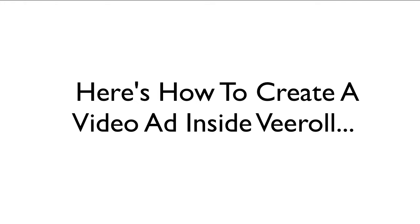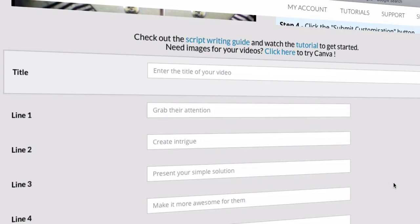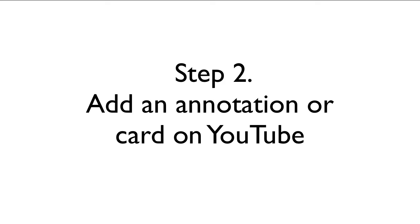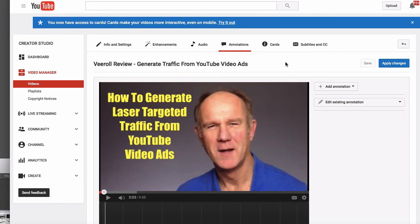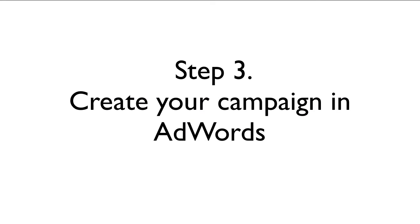Here's how to create a video ad inside V-Roll. Step one: create your video ad inside V-Roll — you just fill out a few lines and your video ad is done. Step two: add an annotation or card on YouTube. Skip step two if you select an easy click template. Step three: create your campaign in AdWords.